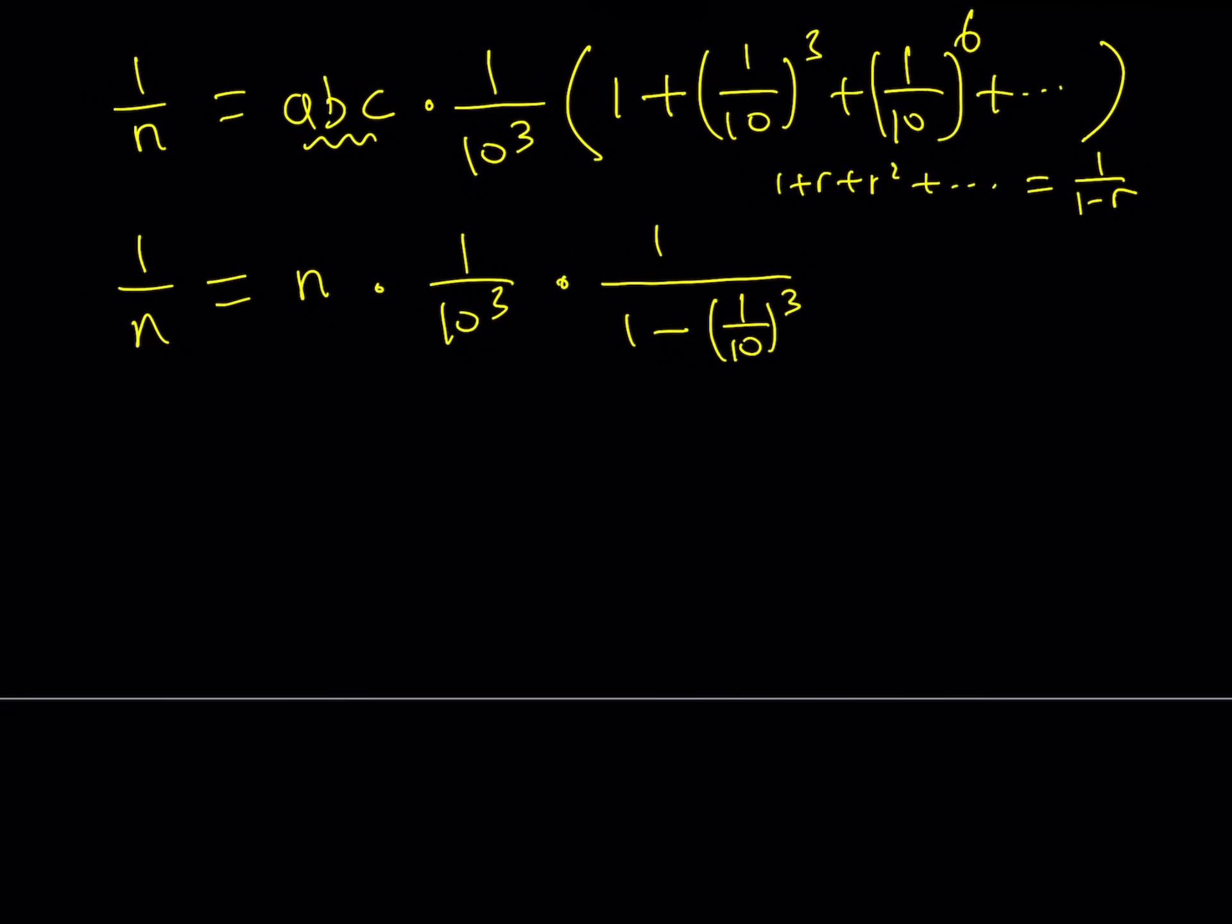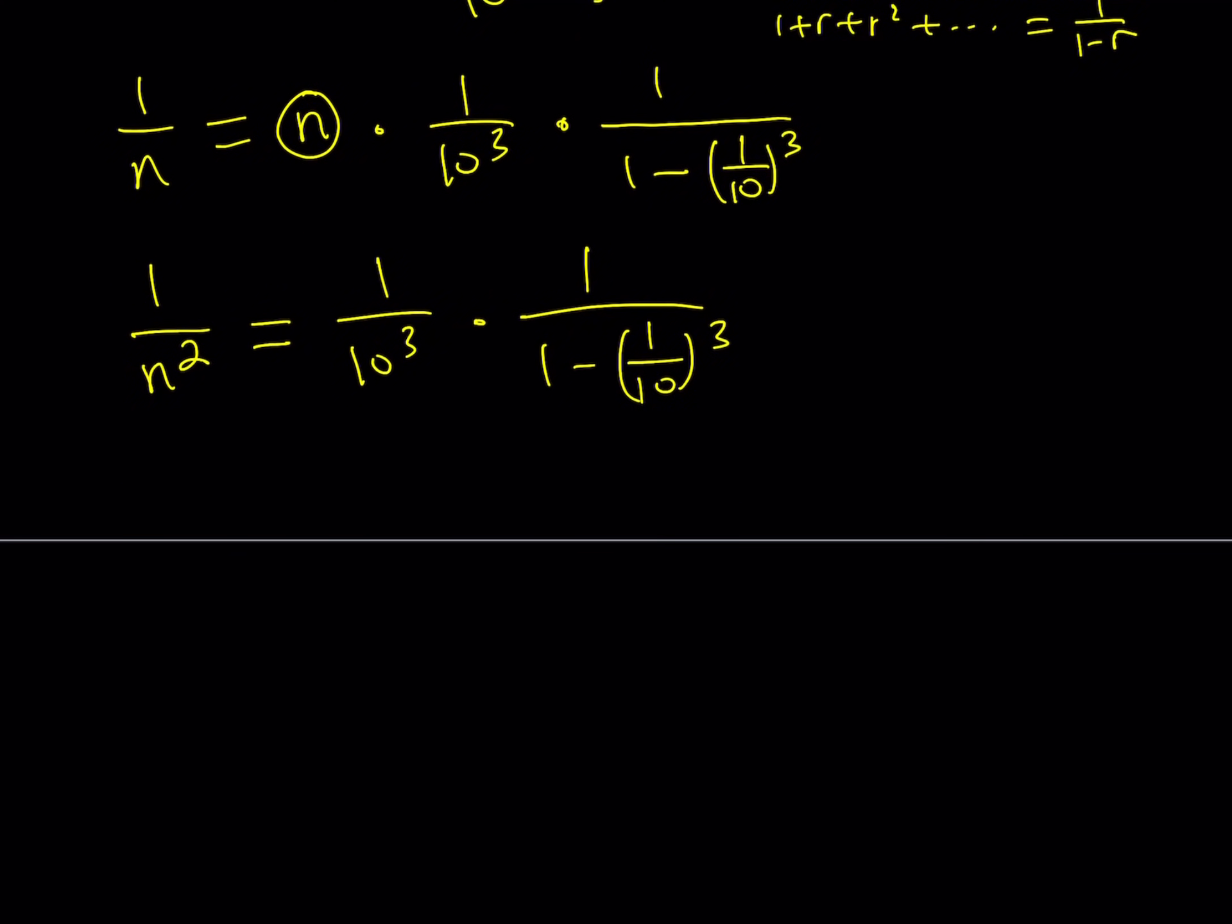Let's divide both sides by n or multiply by one over n because we have another n here. So that's going to give us one over n squared. And then on the right hand side, I'm going to get one over 10 to the third power multiply by one over minus the same thing.